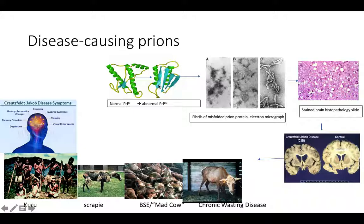Even though the primary structure of the normal cellular prion and the disease-causing prion — the unique amino acid sequence — is identical, what we see in the misfolded, disease-causing prion is a change in secondary structure. That will cause a change in tertiary structure. Furthermore, the disease-causing prions can bind to one another and achieve a new quaternary level of structure. It's these filaments of misfolded prions that somehow trigger our neurons to undergo programmed cell death — apoptosis, or cell suicide.